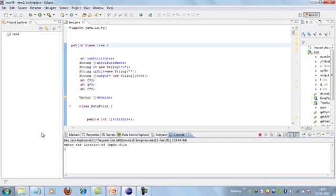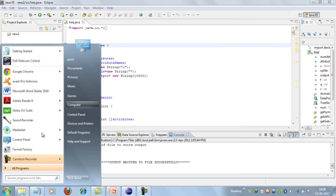Now it prompts for entering the location of the input file. I am giving the input location. It's executed successfully. Now it prompts for the location of the file to write the output. I am giving it as output.txt. The output has been written to the file successfully.